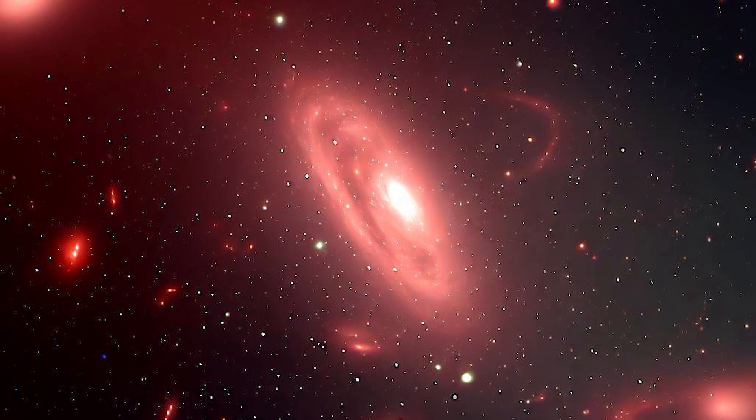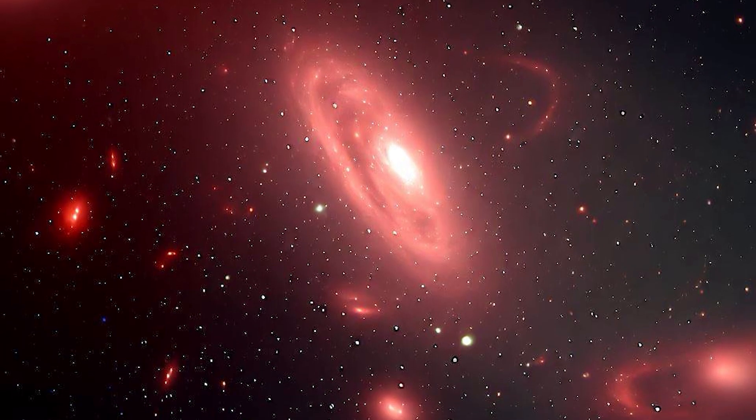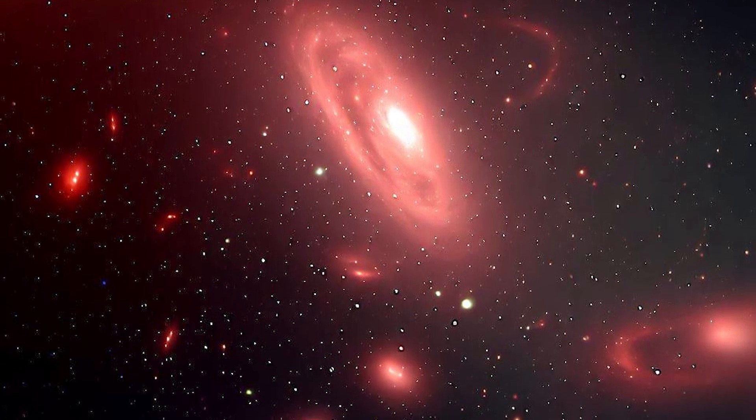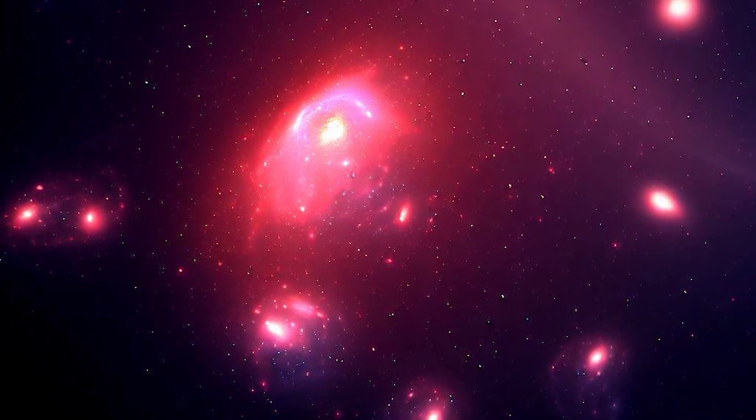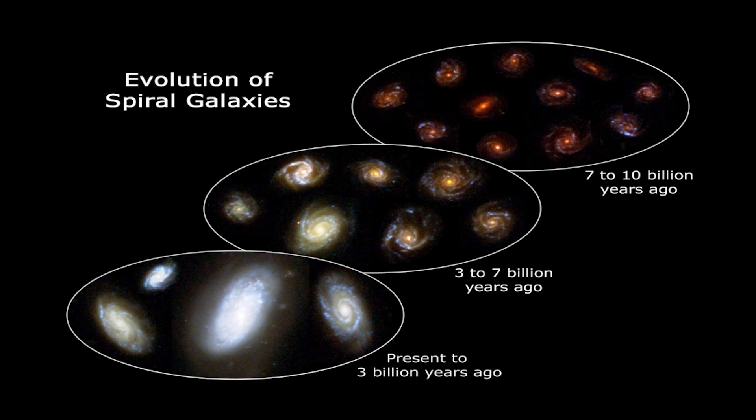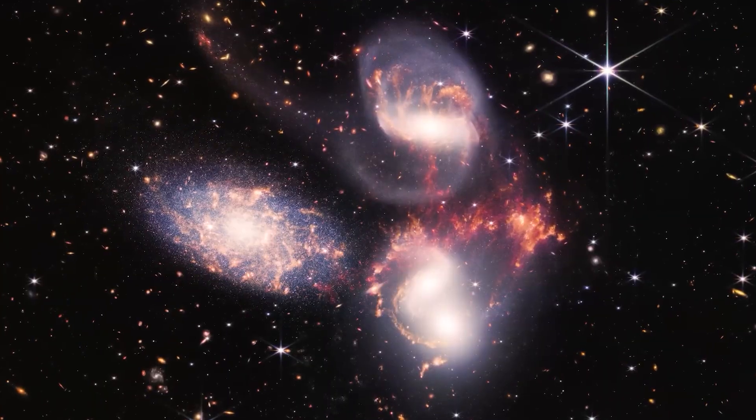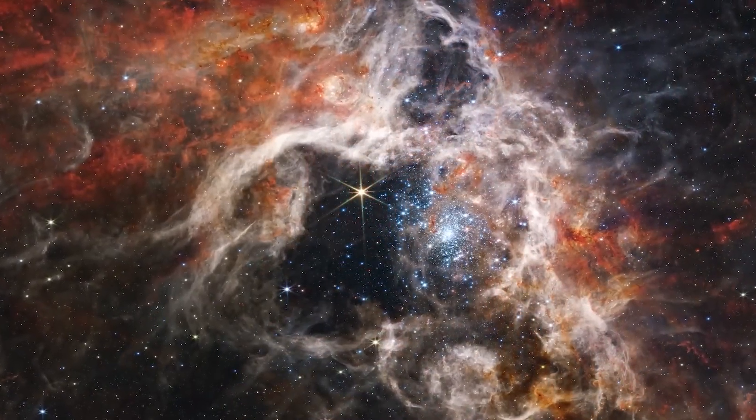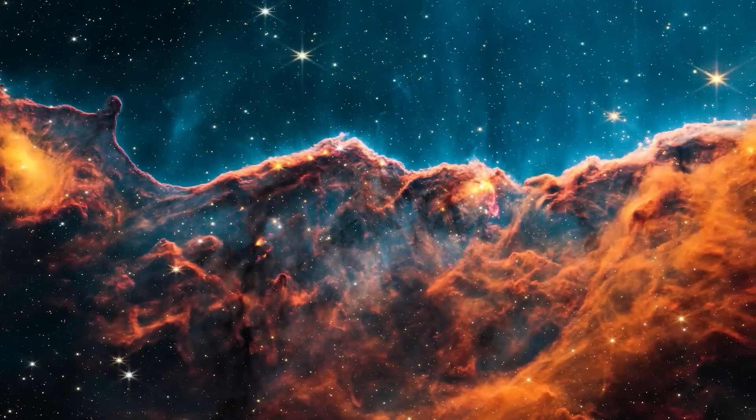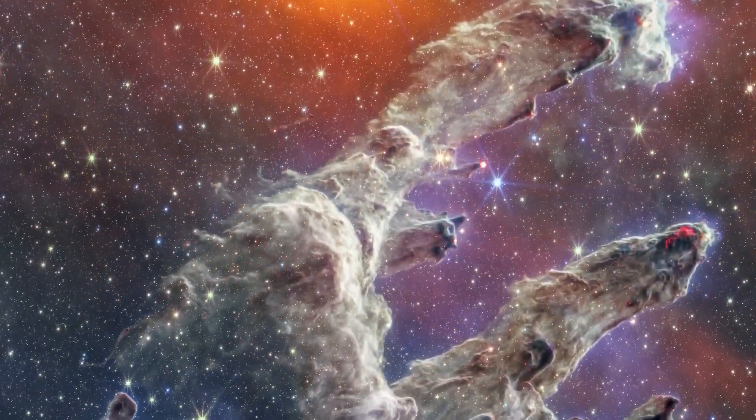The ancient galaxies seen by JADES are very different from current ones. They are small, dim, and young, with massive stars in the making that emit ultraviolet light that ionizes the surrounding gas. These galaxies are crucial to understanding how the first stars and galaxies formed and how they reionized the universe.